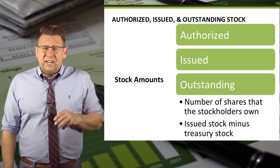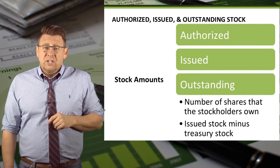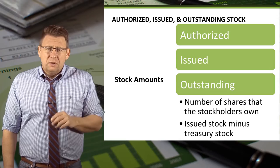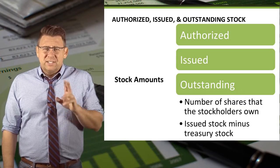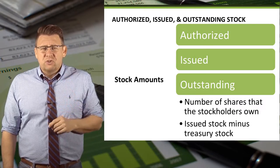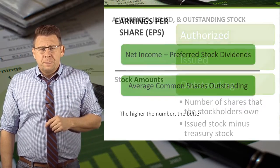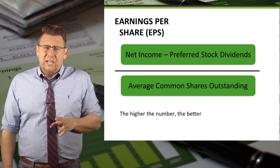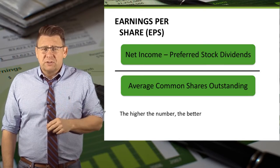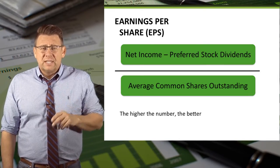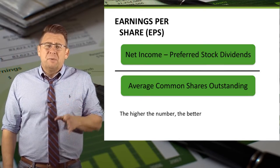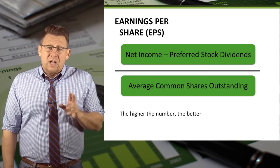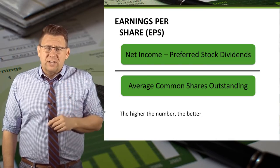Recall that outstanding shares of stock are shares issued minus shares of treasury stock. Earnings per share is calculated as net income minus preferred stock dividends, divided by the average number of common stock shares outstanding.